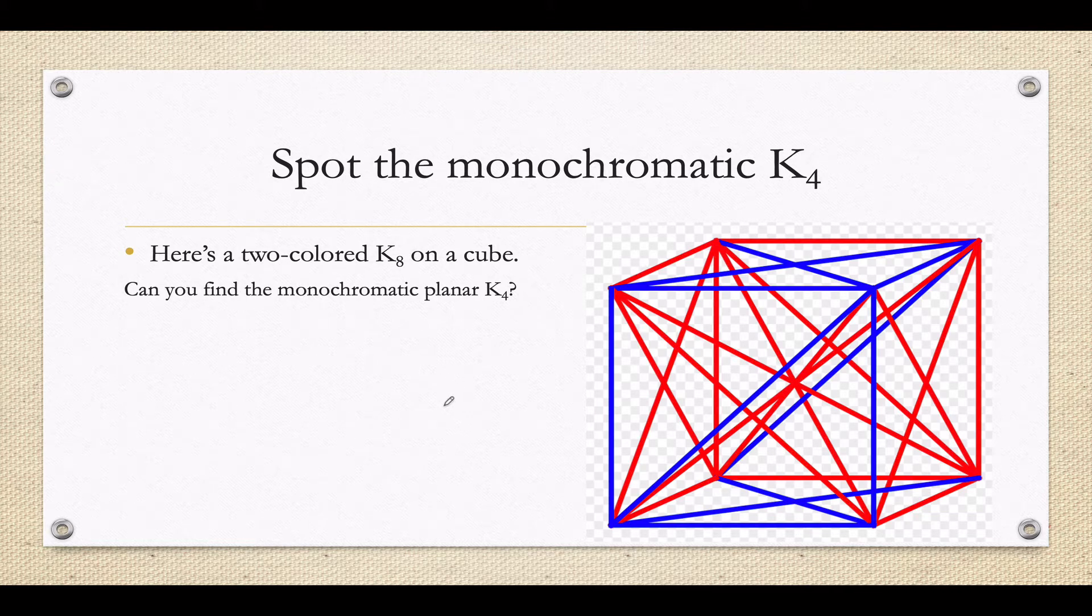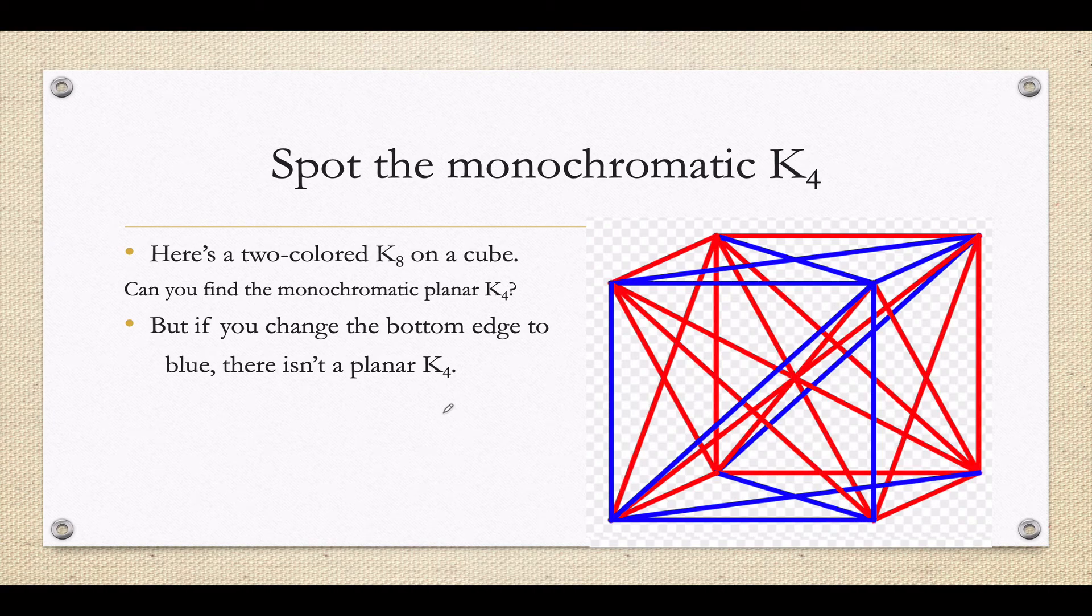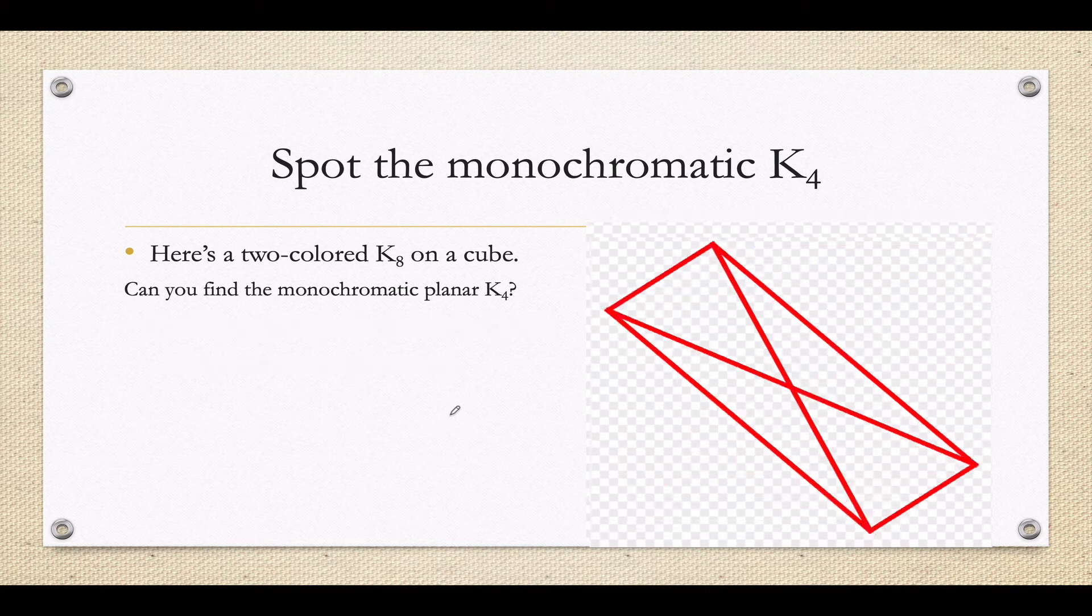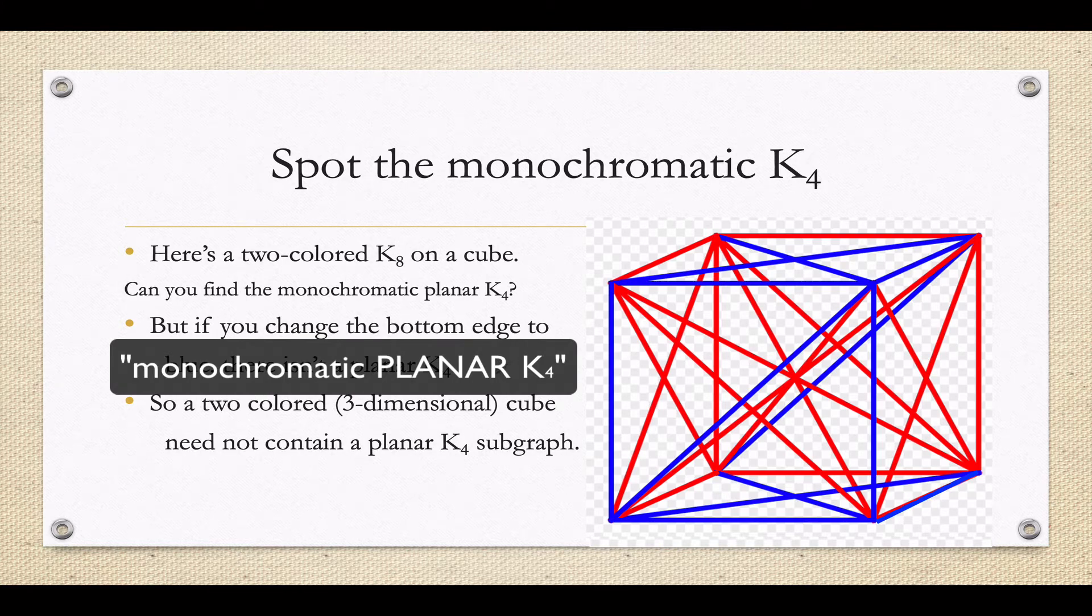And it exists. You might want to pause it and look for it, or if you're not that interested, don't, because here it is. You see it? You kind of see it right there? It's going sort of diagonal. It's all on a plane for sure. It connects this vertex, this vertex, this vertex, and this vertex. At any rate, there is a monochromatic K4.